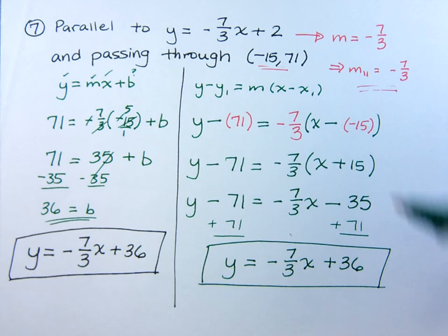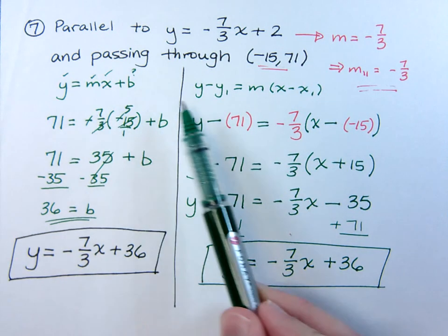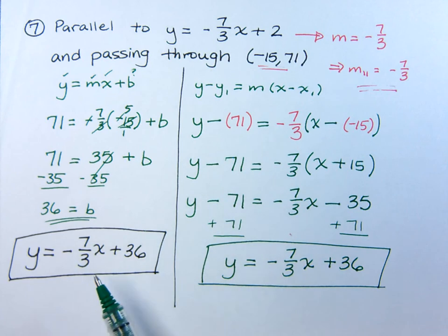So remember, you want to get your slope and a point, and then use one of these formulas. Put the pieces together, and you get your equation.